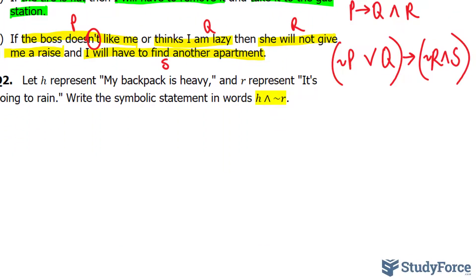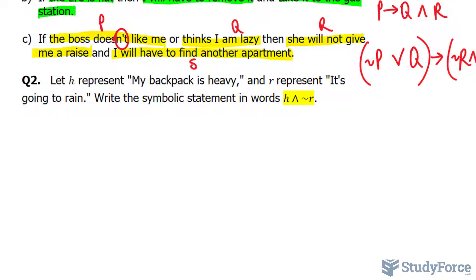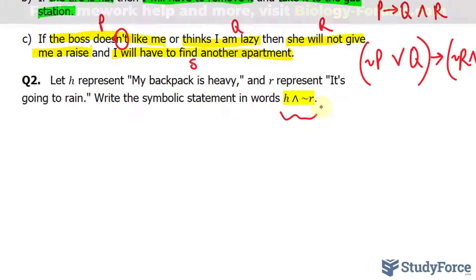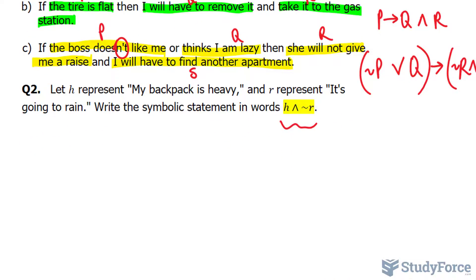Let's move on to question two. Let H represent 'my backpack is heavy' and R represent 'it's going to rain'. Write the symbolic statement in words. So we have H representing my backpack is heavy. That represents, according to our chart, 'and'.